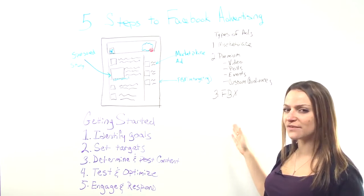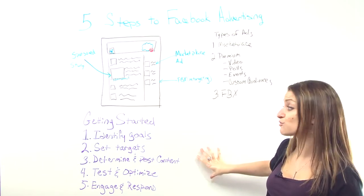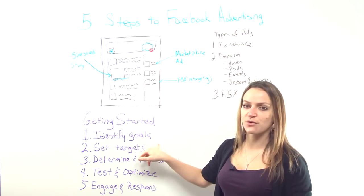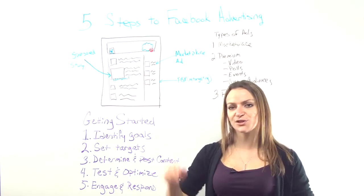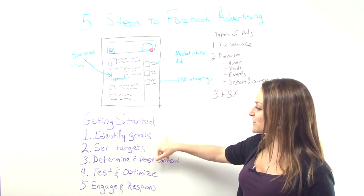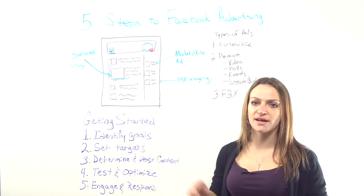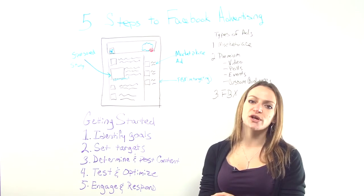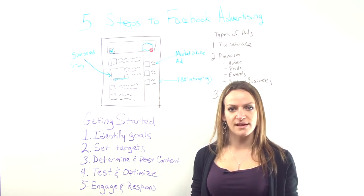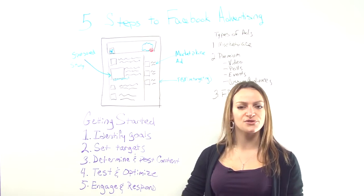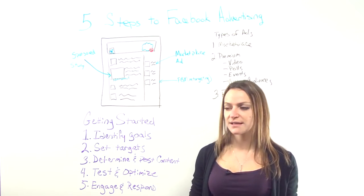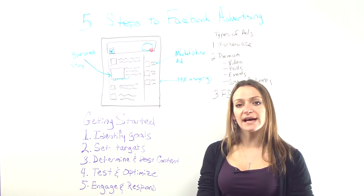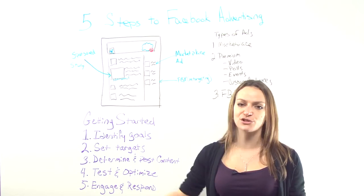Now that you've had a quick primer on the types of Facebook advertising, let's talk about how you'd use it and about getting started. Before you do any type of Facebook advertising, it starts with identifying what your goals are. Are you trying to get net new people, nurture existing people in your database, or go after existing customers to get them to buy a larger, more expensive product? Also identify whether you want them to buy after seeing the ad, or whether it's a brand awareness play.